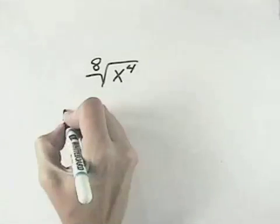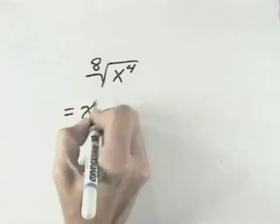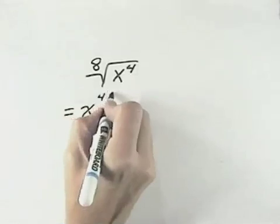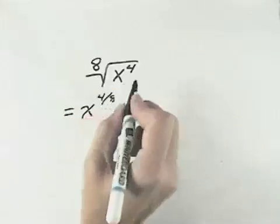we're going to first take our radical expression and write the exponents in rational form. Remember that we have x, and the exponent is the numerator, and the radical, or root, is the denominator.